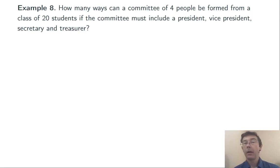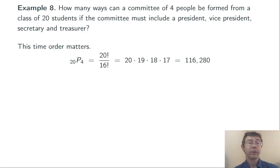Example 8. How many ways can a committee of 4 people be formed from a class of 20 students if the committee has to include a president, vice president, secretary, and treasurer? So, now the orderings are distinct. If person A is president, that's different than if person A is vice president. This is 20 permute 4.